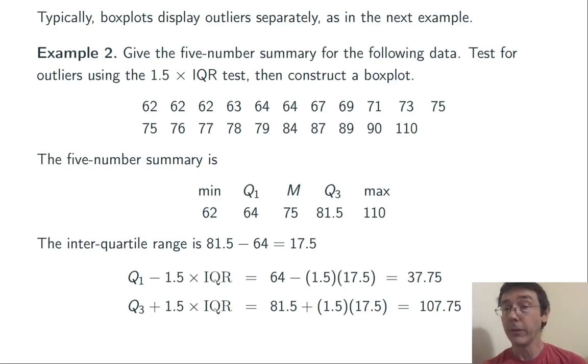Values that lie outside of that range, that are less than 37.75 or more than 107.75, should be considered outliers by this test. In this case, 110 should be considered an outlier.